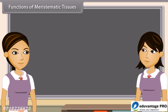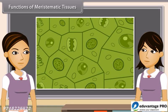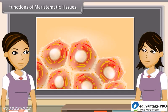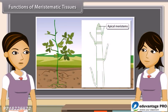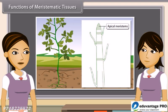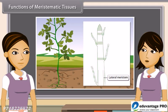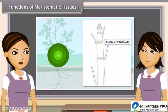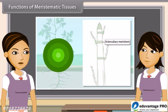The main function of meristematic tissue is the continuous formation of new cells. Apical meristem increases the height of the plant due to elongation of the root and stem — this is also called primary growth. Lateral meristem increases the diameter of the plant — this is also called secondary growth. Intercalary meristem increases the length of an organ.